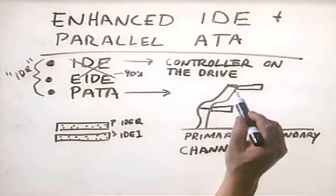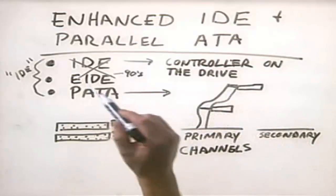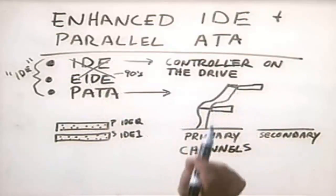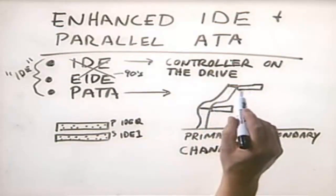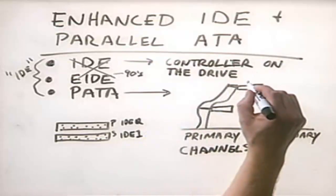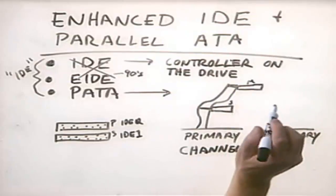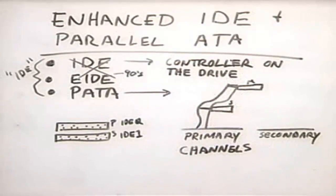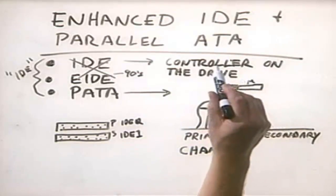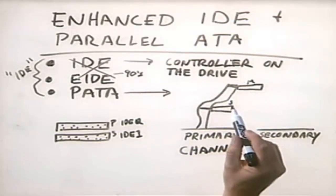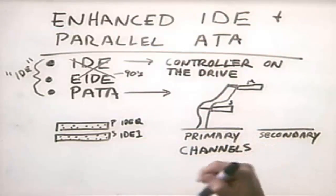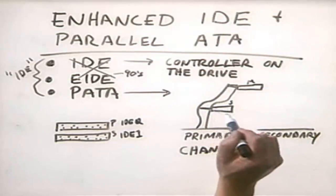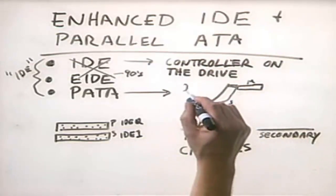The important thing to remember with IDE is that although you have two different channels, devices connected to the same channel share the same bus. In a parallel ATA system the ribbon cable has 80 wires; on enhanced IDE or original IDE it only has 40. The wires are shared by both devices on the channel. One device is configured as master and one as slave. When a device is set as master, its controller is enabled. When set as slave, its controller is turned off and the master's controller controls it.